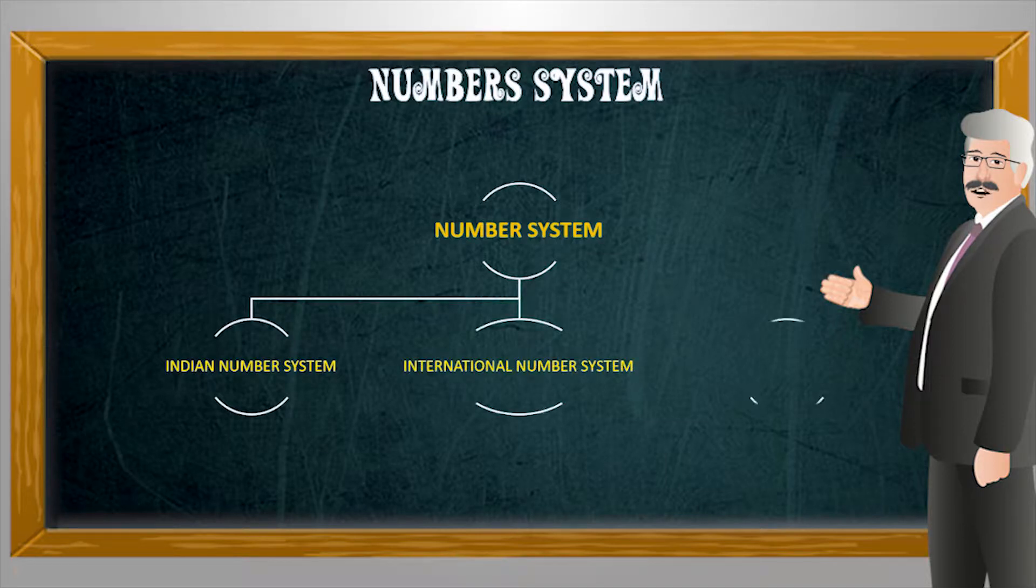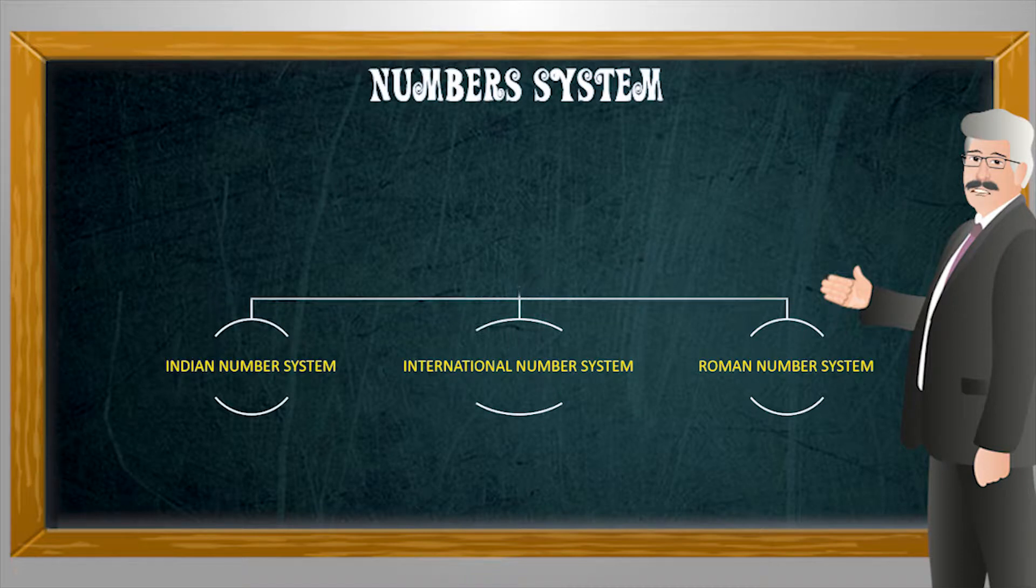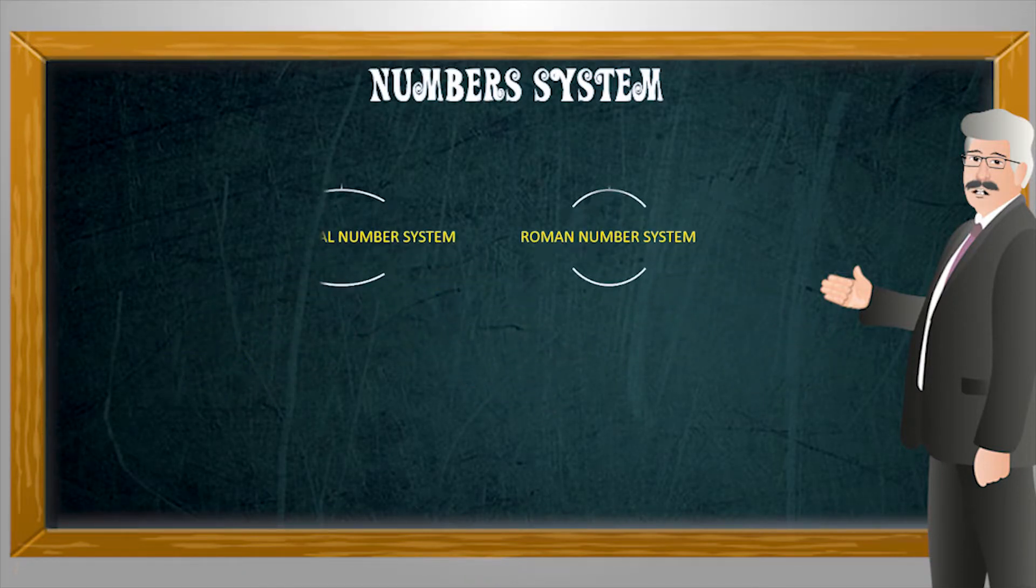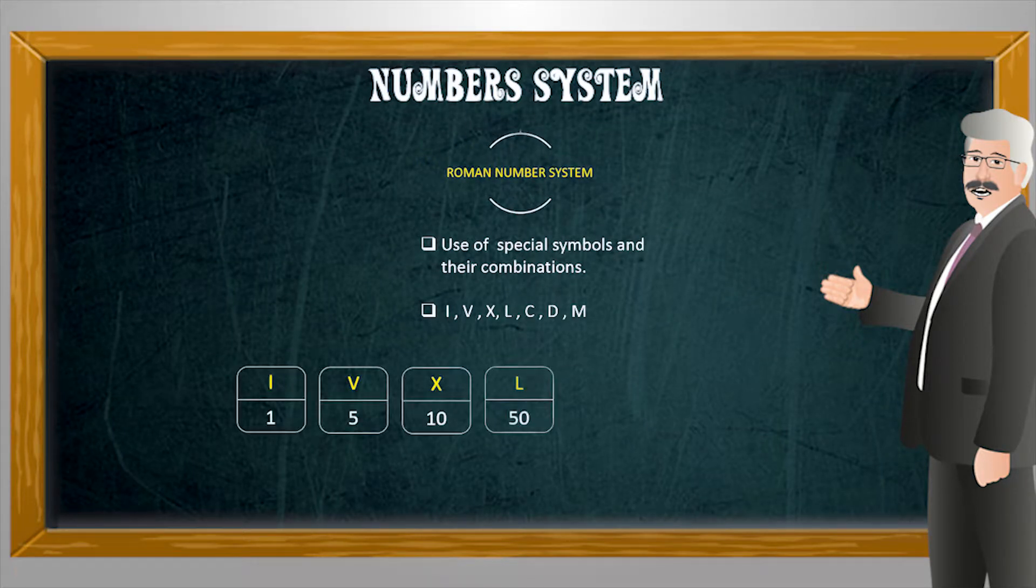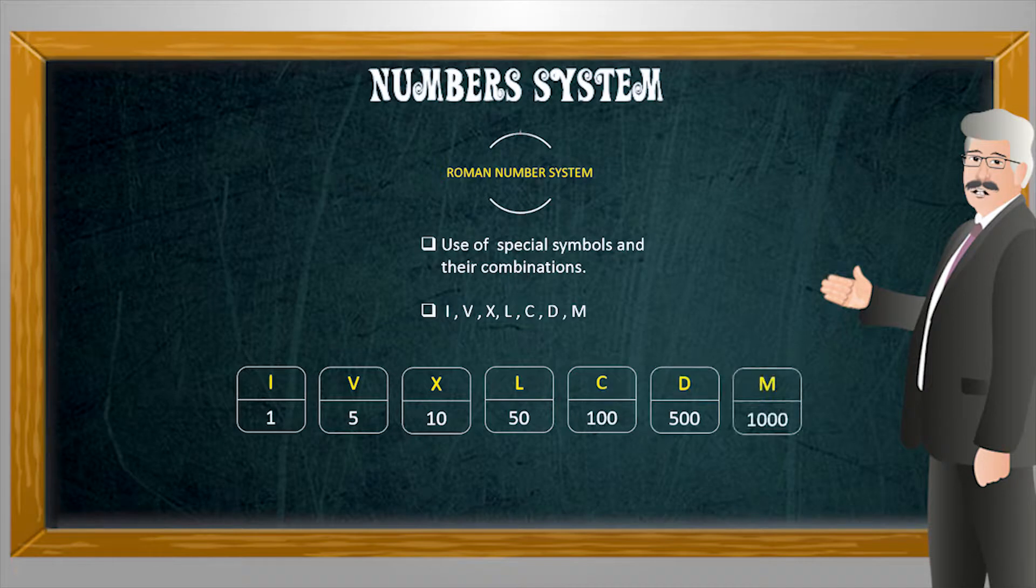And now we will look at another popular number system used globally which is the Roman number system. It was introduced by Romans around 500 BC. This number system is quite different from other systems we studied earlier as it does not use any of the digits to represent any numeral.